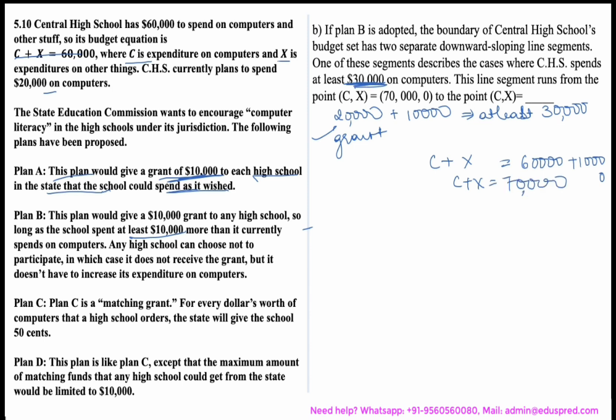We know the school is spending at least $30,000 on computers. Putting this minimum value into the equation c plus x equals 70,000, we get x equals $40,000. This point represents the minimum computer spending needed to qualify for the grant, leaving $40,000 for other things. So the point on this line segment is (30,000, 40,000).